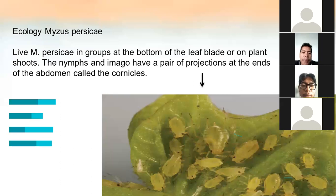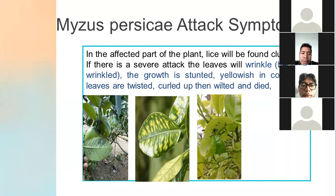Ecology: Myzus persicae lives in groups at the bottom of the leaf blade or on plant shoots. The nymphs and imagos have a pair of projections at the ends of the abdomen called cornicles, which can be viewed in the background image.